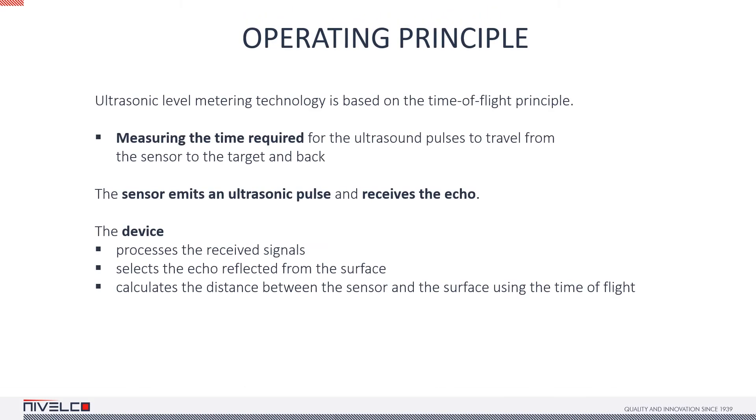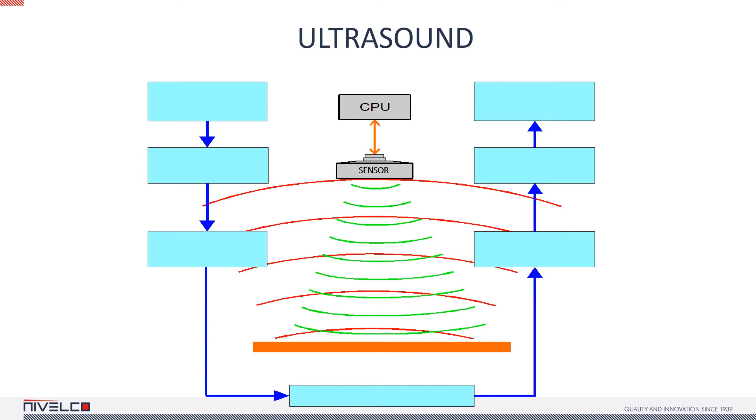Ultrasonic devices use the time of flight operating principle. They measure the time it takes for the ultrasound to travel from the sensor to the measured objects and back. The sensor emits a string of ultrasonic pulses and receives the echoes bouncing back from the target. The device processes the received echoes, selects the ones that carry relevant information and it calculates the distance between the sensor and the measured level.